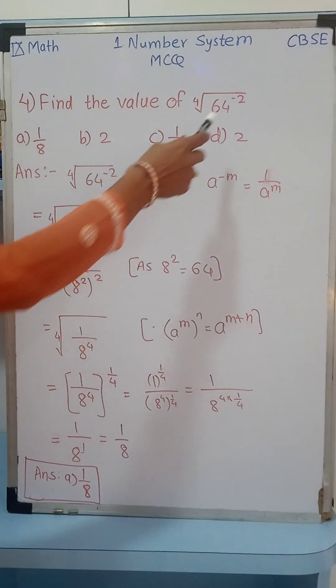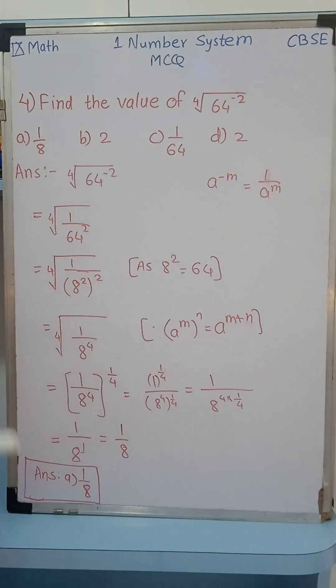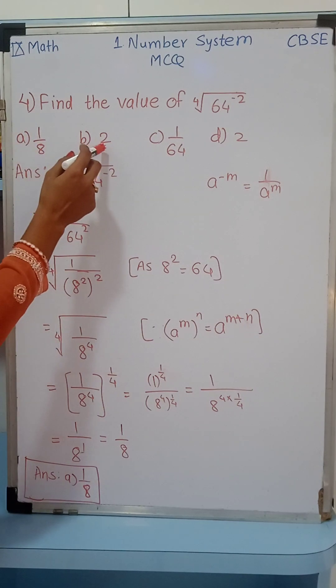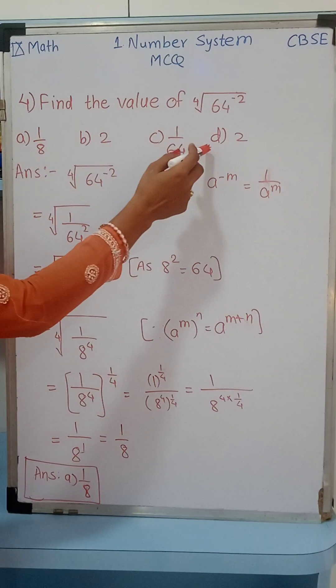Now, many times, if it is a negative power, you get confused what to do with this. We will check it. The options are: A) 1/8, B) 2, C) 1/64, and D) 2.